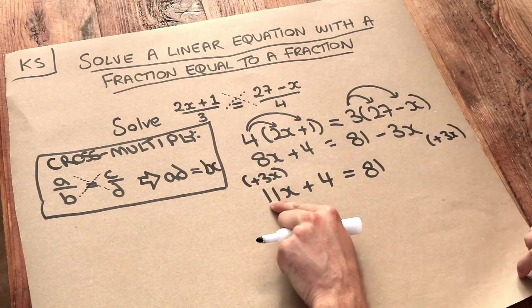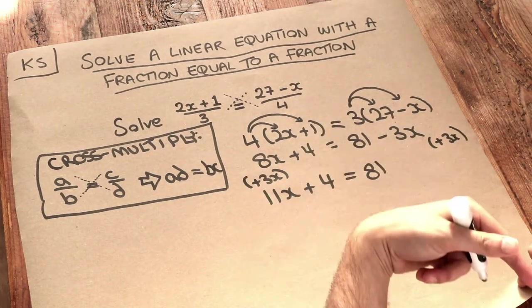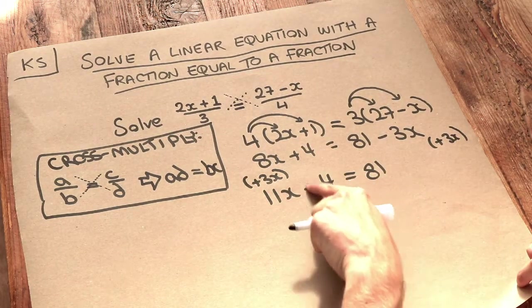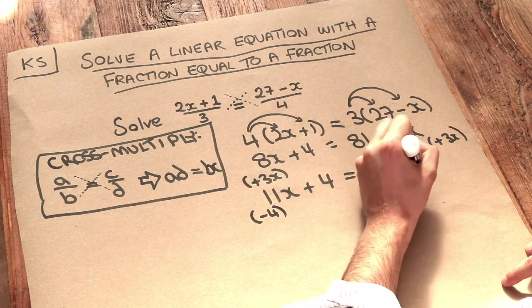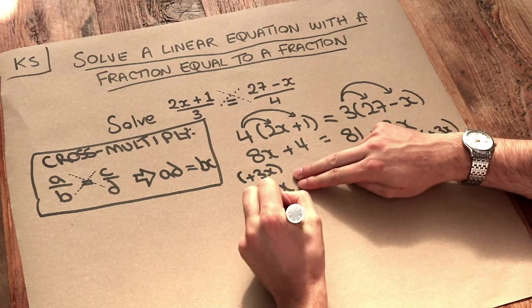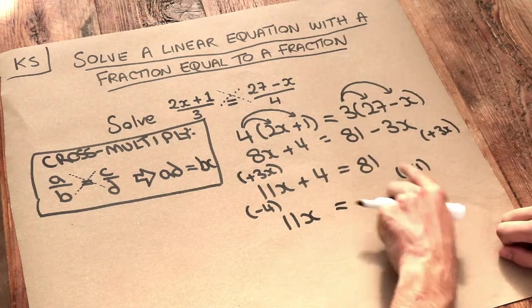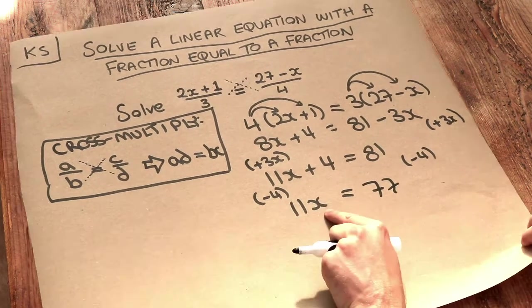Now x has been multiplied by 11, then we added 4 to it. So we undo the last thing that happened to x. The last thing here is the add 4, so we do the opposite—subtracting 4 from both sides. That gets rid of the plus 4, leaving just 11x. We've also got minus 4 from the other side of the equation, which is 77. Then the x was being multiplied by 11.